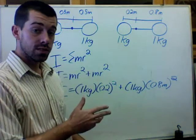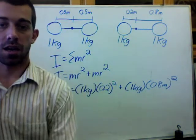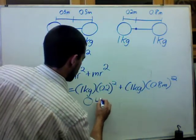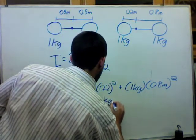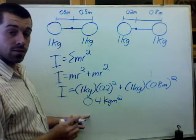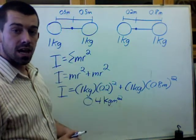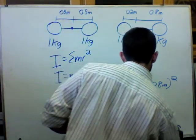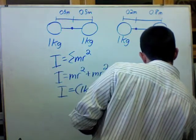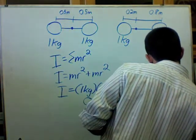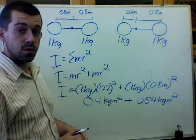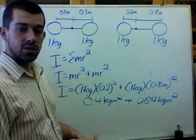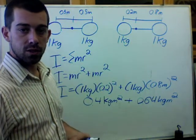Now, when I do these calculations, I'm going to find out that one of these supplies 0.04 kilogram meters squared of rotational inertia, whereas the other supplies 0.64. When I add those together, I find out that the total rotational inertia is 1.04 kilogram meters squared.